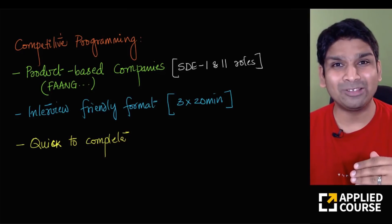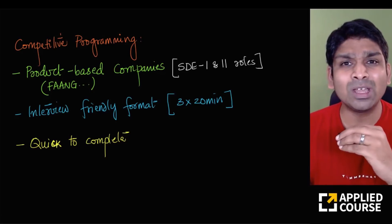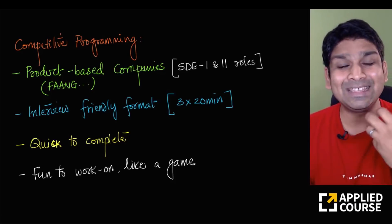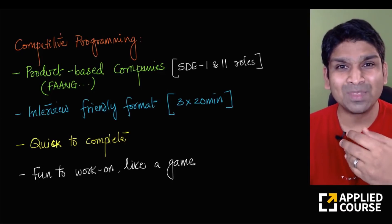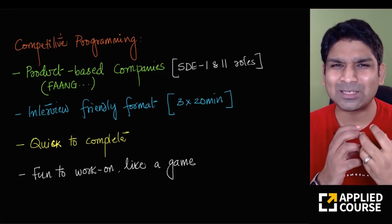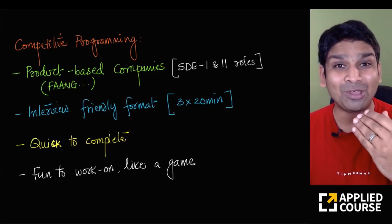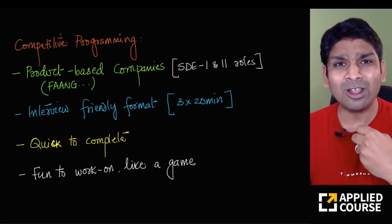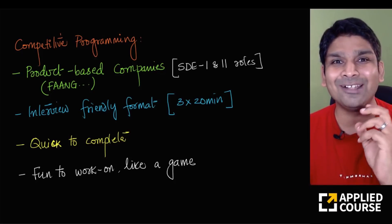For someone practicing competitive programming, it's very quick to complete. Even as a beginner, given simpler problems, you can write a whole solution in about an hour. These are fun problems to work on — especially if you're a young computer science engineer, they often feel like playing a game. That's why it's called competitive: there are lots of competitions, and you can finish even as a beginner in under an hour.